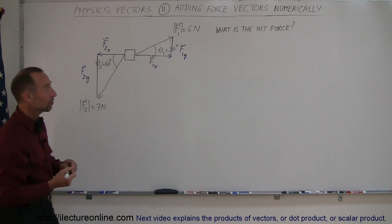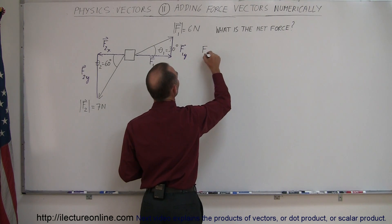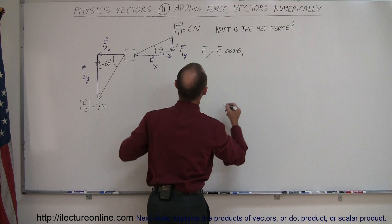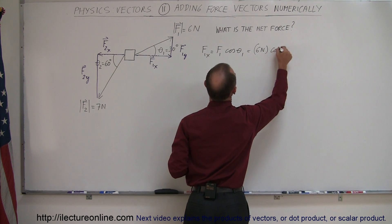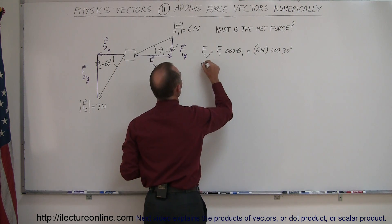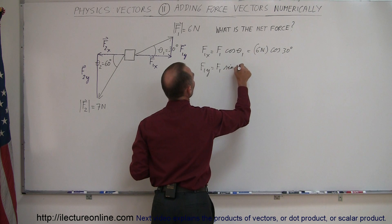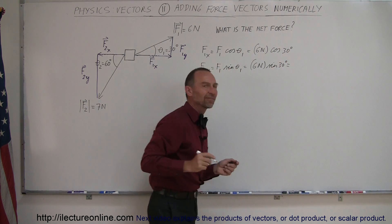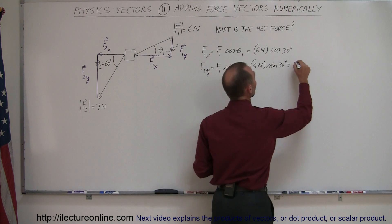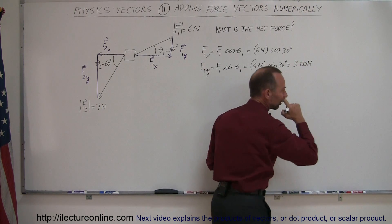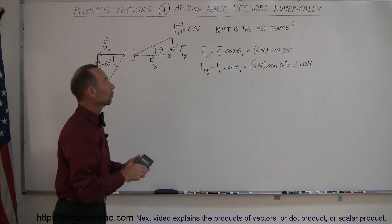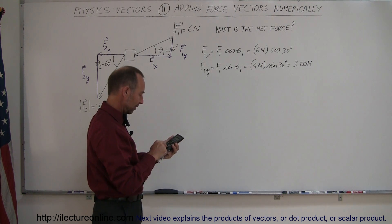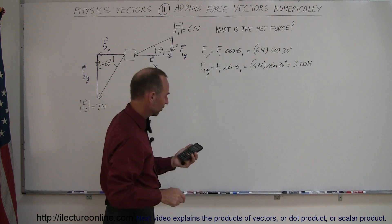Let's find the X and Y components of each vector. F1X is equal to F1 times the cosine of theta 1, because it's adjacent to that angle. So this would be 6 Newtons times the cosine of 30 degrees. F1Y is equal to F1 times the sine of theta 1, which is 6 Newtons times the sine of 30 degrees. Since the sine of 30 degrees is one half, that gives us 3.00 Newtons. Taking the cosine of 30 degrees times 6, I get 5.17 Newtons.